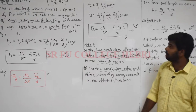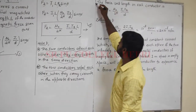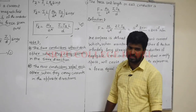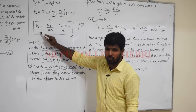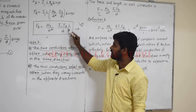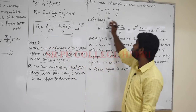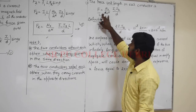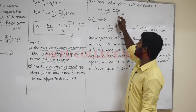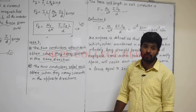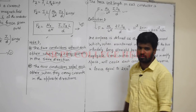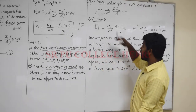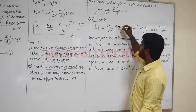Now for the definition of one ampere: the force per unit length on each conductor is F / L = μ₀ / (2π) × I1 × I2 / D. With L = 1 meter, F = μ₀ / (2π) × I1 × I2 / D. This can be rewritten as F = μ₀ / (4π) × 2 × I1 × I2 / D, where μ₀ / (4π) is a constant equal to 10⁻⁷.